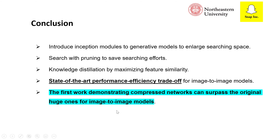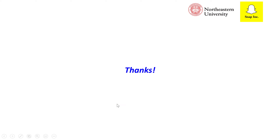In summary, we introduced the inception module to the generator to enlarge searching space, and search with pruning to save searching cost. We use knowledge distillation by maximizing feature similarity and achieve state-of-the-art performance-efficiency trade-offs for image-to-image models. Our work is the first to demonstrate that compressed networks can outperform the original large models for image-to-image translation. Thank you.